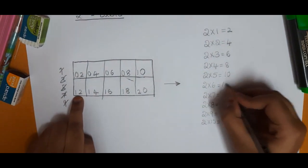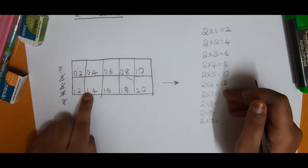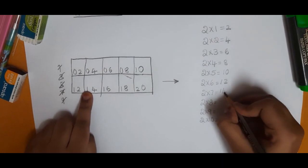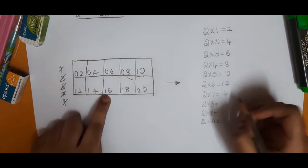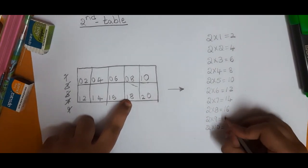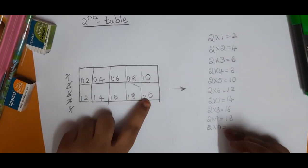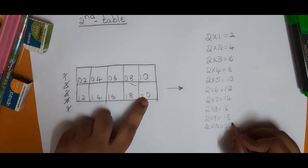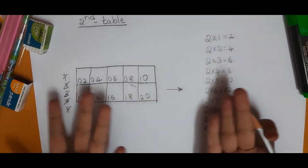twelve, two sevens are fourteen, two eights are sixteen, two nines are eighteen, two tens are twenty. Okay, this is very simple trick.